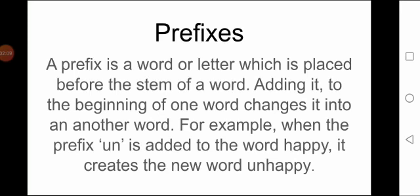These two things are opposite to each other. A suffix we add at the end of the actual word, and a prefix is a word or letter which is placed at the beginning of the stem of a word. Adding it to the beginning of a word changes it into another word. For example, when the prefix UN is added to the word HAPPY, it creates the new word UNHAPPY, which is totally opposite to HAPPY.